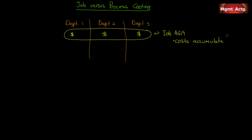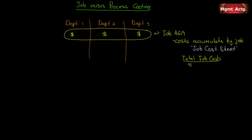Costs are tracked by the job cost sheet. This is where we track all the direct materials for the job, all the labor, and we assign overhead — whether it's one plant-wide overhead rate or specific department overhead rates — applied to each job. Once we come up with our total job costs, we divide by the number of units in that job to get our cost per unit. This is chapter 5 — we already know this.